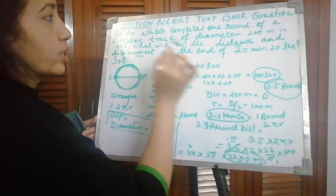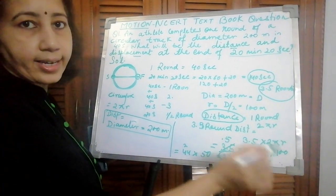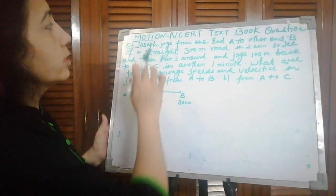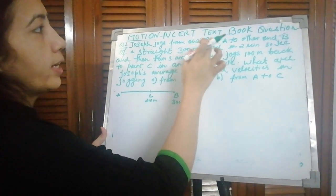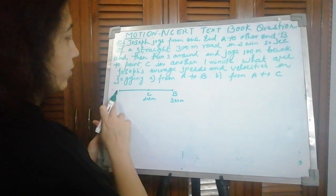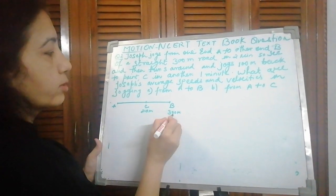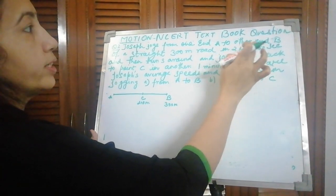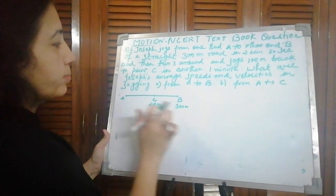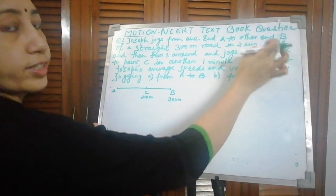So this is the whole question: distance and displacement at the end of 20 minutes 20 seconds. Now our second question is: Joseph jogs from one end A to other end B of a straight 300 meter road in 2 minutes 50 seconds.